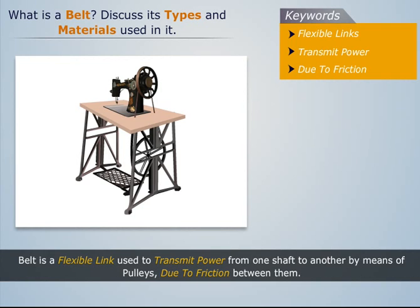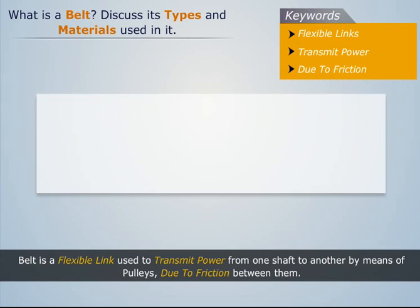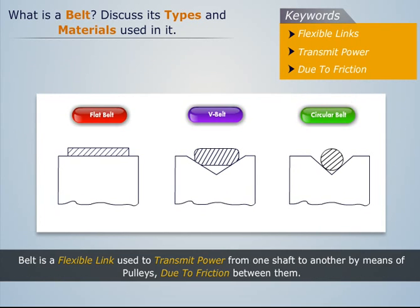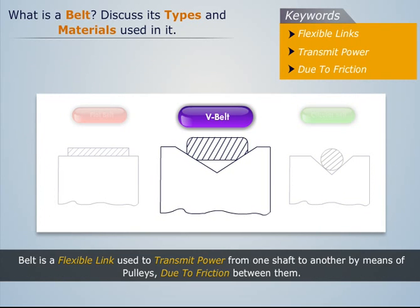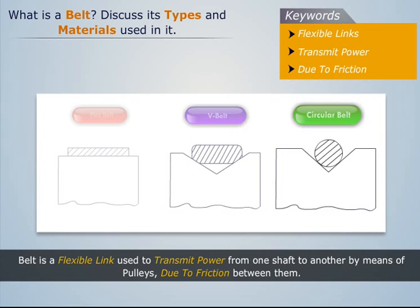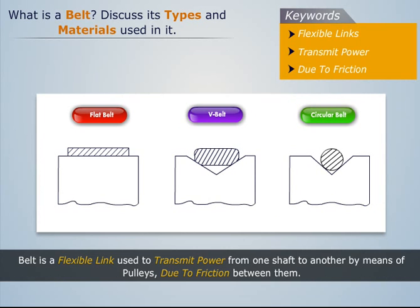There are several types of belts, but the three main types are: flat belt, V belt, and circular belt. Now let's see each of them one by one.